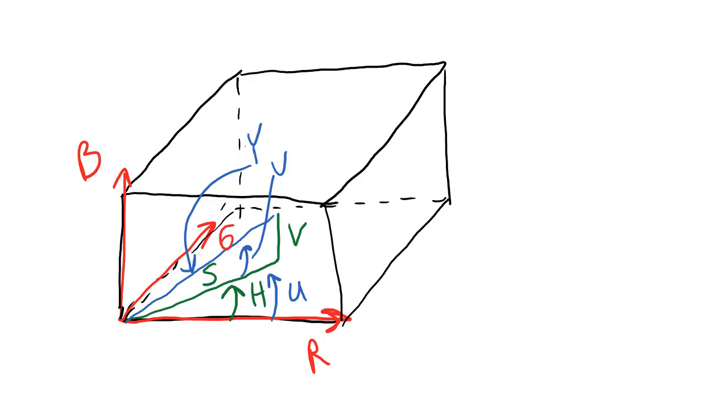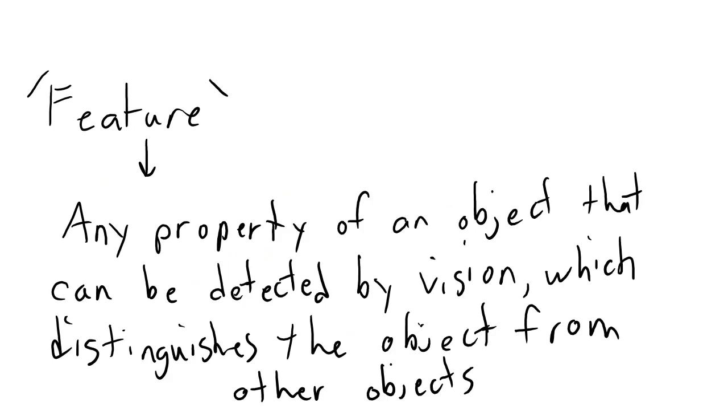So, since any color could be expressed in any one of these three color spaces, why should we care about color spaces at all? One of the reasons has to do with a concept in machine vision known as features. A feature is any property of an object that can be detected by vision, which distinguishes the object from other objects.